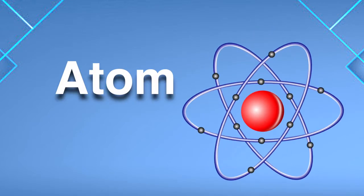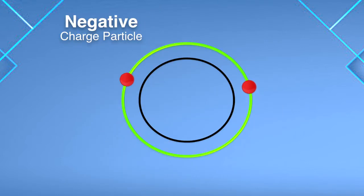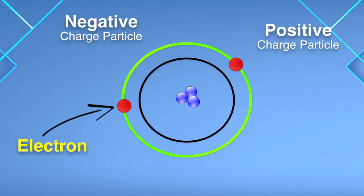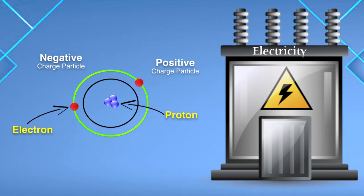Everything started with an atom, or did it? Nah, look in. There is a negative charged particle that we today call electron and a positive charged particle proton, and they are too small.